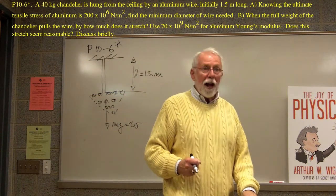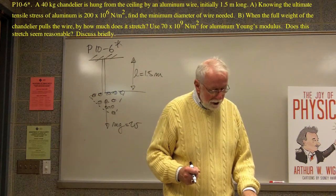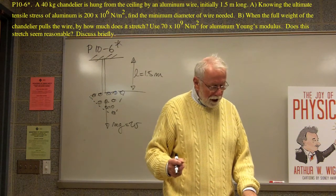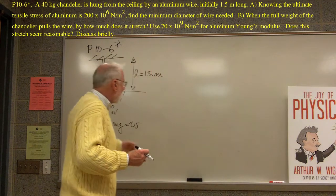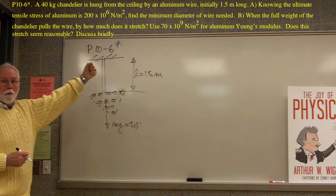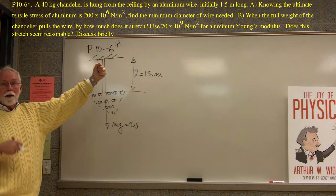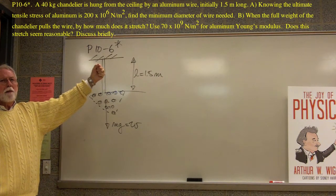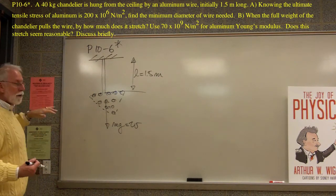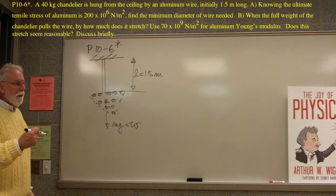So then, what does it ask for? Well, it says part A, knowing the ultimate tensile stress, find the minimum diameter of the wire needed. So that says, as you know, you've got to have a wire which is thick enough to hold this. Because if the wire's not thick enough, it may fall and break. Okay. So, that's easy enough to think about. So then, how do we turn that into a physics principle and actually calculate it?